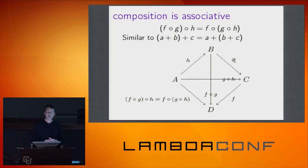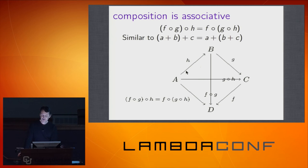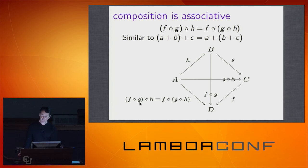Composition is associative — similar to how addition or multiplication is associative: A + B + C gives the same result regardless of grouping. With this diagram: if you first run H (getting from A to B), then compose F after G, you arrive at D. Or you can first run G after H, then run F — and you arrive at D again. They're all really doing: run H, then G, then F, which as one thing without parentheses is just a function from A to D.